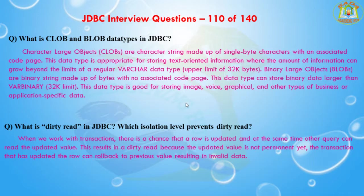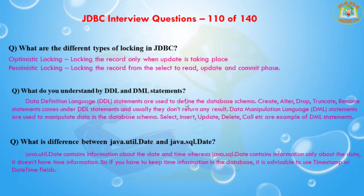The next question is: what are the different types of locking in JDBC? There are two types of locking mechanisms that prevent data corruption when more than one user is working with the same data. The first one is optimistic locking — it locks the records only when an update is taking place. The second one is pessimistic locking — it locks the records from the select phase through the read, update, and commit phases.